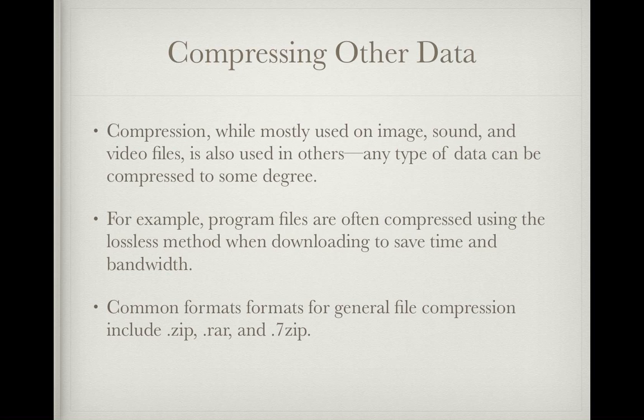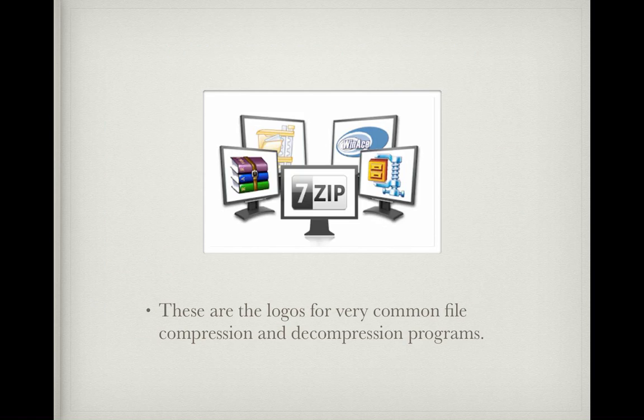Compression, while mostly used on image, sound, and video files, is also used in others. Any type of data can be compressed to some degree. For example, program files are often compressed using the lossless method, which helps when downloading to save time and bandwidth. Common file formats for general file compression include .zip, .rar, and .7zip. These are logos for the most common file compression and decompression programs, such as WinRAR, 7zip, and others.